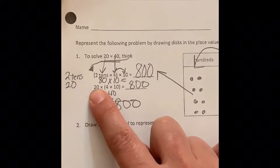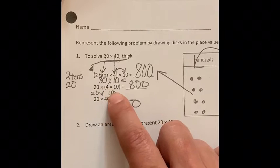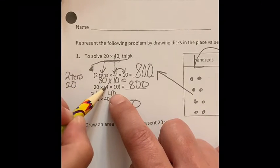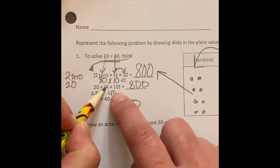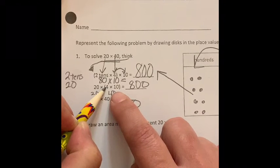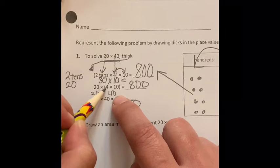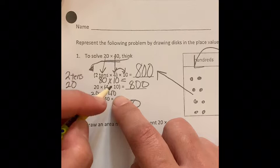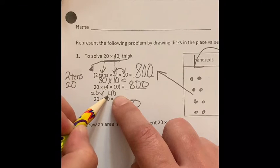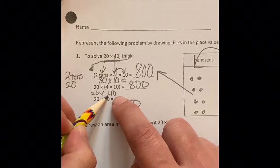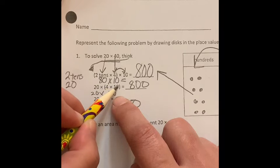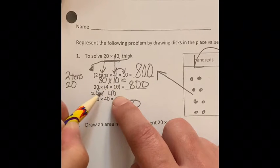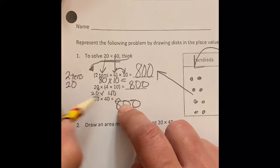20 times four times ten. So if you can see right here, I thought, oh well, parentheses first. Whatever I see in my parentheses, I'm going to do first. It's my son, he is sneaking some cookie dough while I am making my video. Naughty. All right, four times ten is 40, and then I'm going to bring down my 20. 20 times 40 is going to be 800.